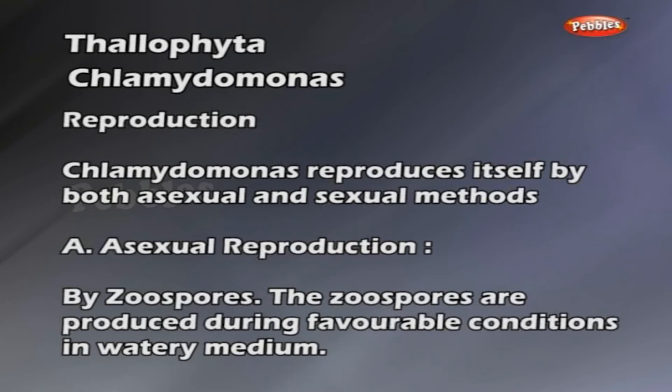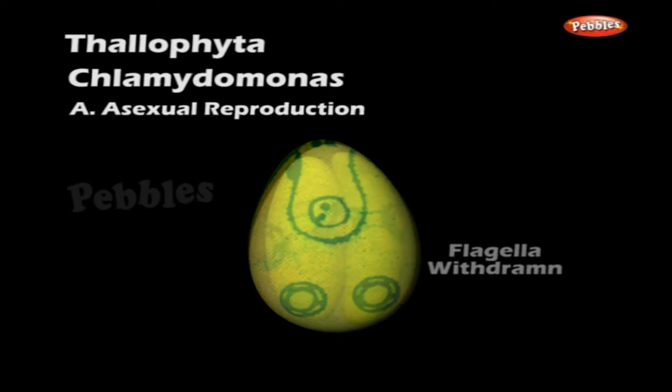Reproduction: Chlamydomonas reproduces itself by both asexual and sexual methods. Asexual reproduction by zoospores: The zoospores are produced during favourable conditions in a watery medium. The cell withdraws its flagella and becomes non-motile.